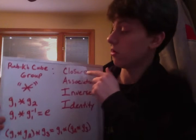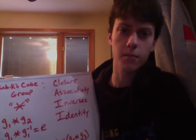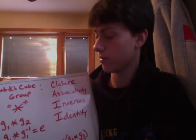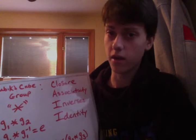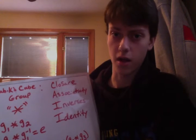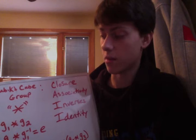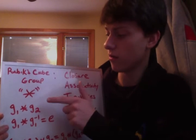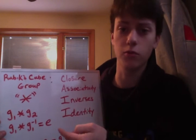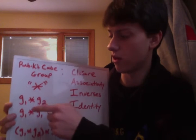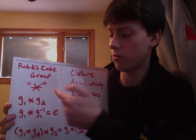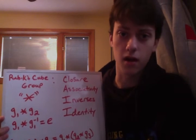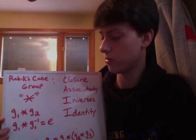To begin, we'll start with closure. Closure means that when we combine any two elements from the Rubik's Cube group, it yields a member of that group as well. And that is true — for any two arbitrary elements we take from the Rubik's Cube group, G1 and G2, we will get another member of the Rubik's Cube group.